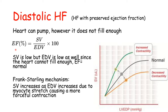Diastolic heart failure can be visualized using the Frank-Starling mechanism. The Frank-Starling law states that stroke volume will increase as end-diastolic volume increases, due to myocyte stretch causing a more forceful contraction — essentially, the more the heart stretches, the more forceful the contraction. If you're not going to have much blood filling the heart, you won't have a lot of stretch, and so you won't pump blood that strongly — and so you have diastolic heart failure.